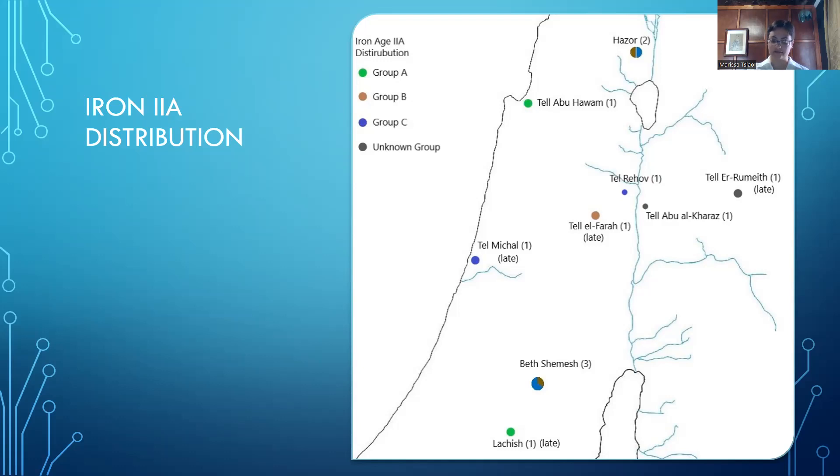These Aegean style items from Tel Abu Hawam and Tel Lachish, alongside items belonging to groups B and C, thus indicate the development of local variants.